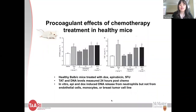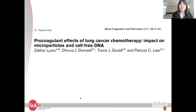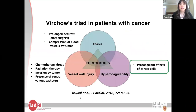In healthy mice, injection of chemotherapy agents — including epirubicin — increased both DNA levels and thrombin-antithrombin complexes measured 6 to 48 hours post-treatment. In vitro, epirubicin and doxorubicin — both anthracyclines — can induce DNA release from neutrophils but not from endothelial cells, monocytes, or breast cancer cell lines. We've also demonstrated that lung cancer chemotherapy agents can induce the release of tissue factor-positive and phosphatidylserine-positive microparticles from various cells, including lung cancer cells.